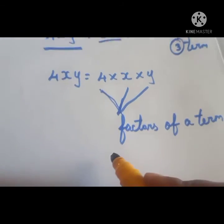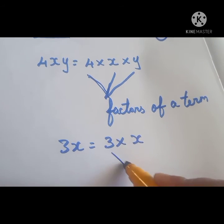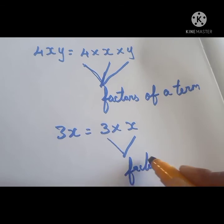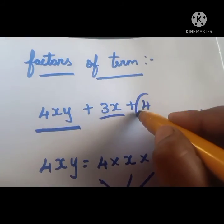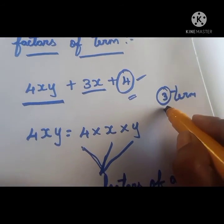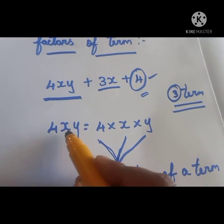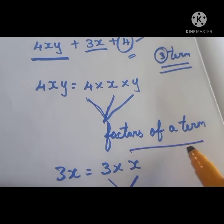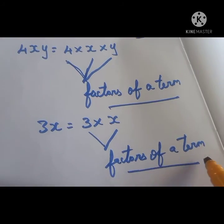The next term is 3x. 3x can be written as 3 into x, so 3 and x are the factors of that term. Finally, we have only 4, so 4 is the factor of that term. Each part multiplied together makes up a term, and those parts are called factors of a term.